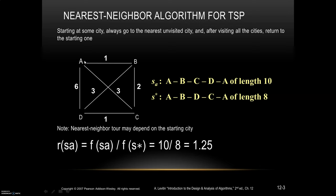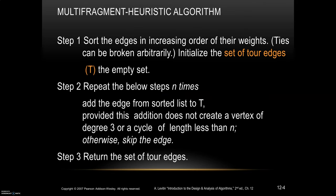Applying the nearest neighbor algorithm to the graph, we start the tour from city A. The nearest neighbor is B, then C, then D, then we return to A. The tour length is 10 — this is the approximate solution. The exact solution is A→B→D→C→A with tour length 8. The accuracy ratio is 10 divided by 8, which equals 1.25, meaning the approximate tour length is 25% more than optimal.